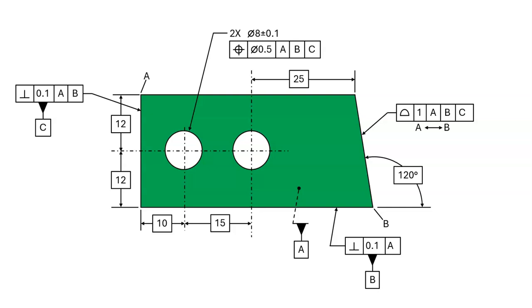A basic dimension specifies an exact, perfect, theoretical distance or a perfect, theoretical angle. Basic dimensions are often misunderstood.